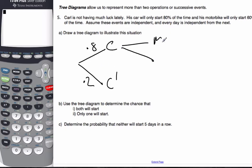His motorbike, he tries that. It either starts or does not start. And it will only start 60% of the time, so it does not start the other 40%. Here is my tree diagram, and I'm assuming these are independent and every day is independent from the next.